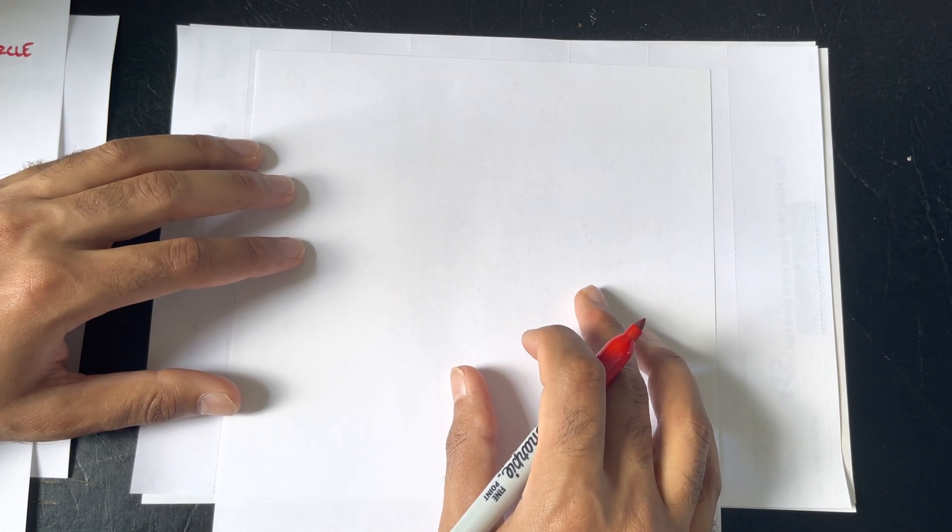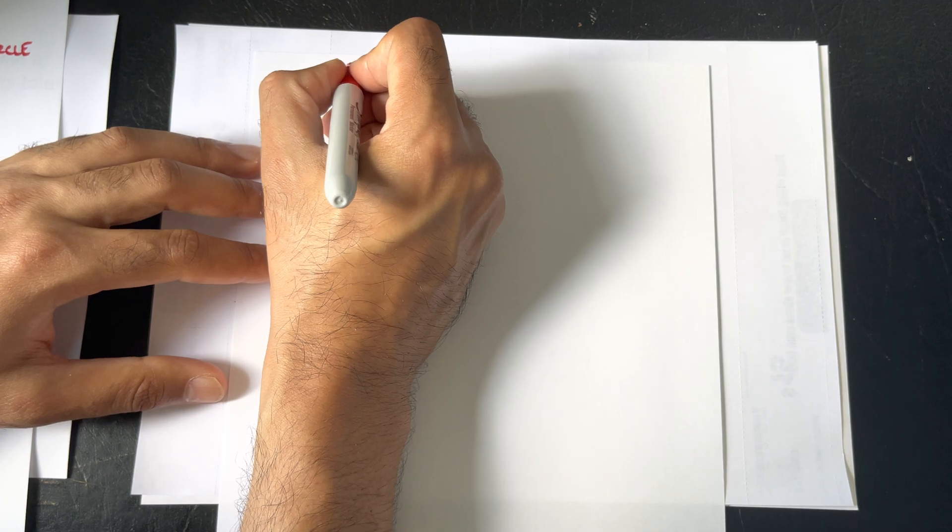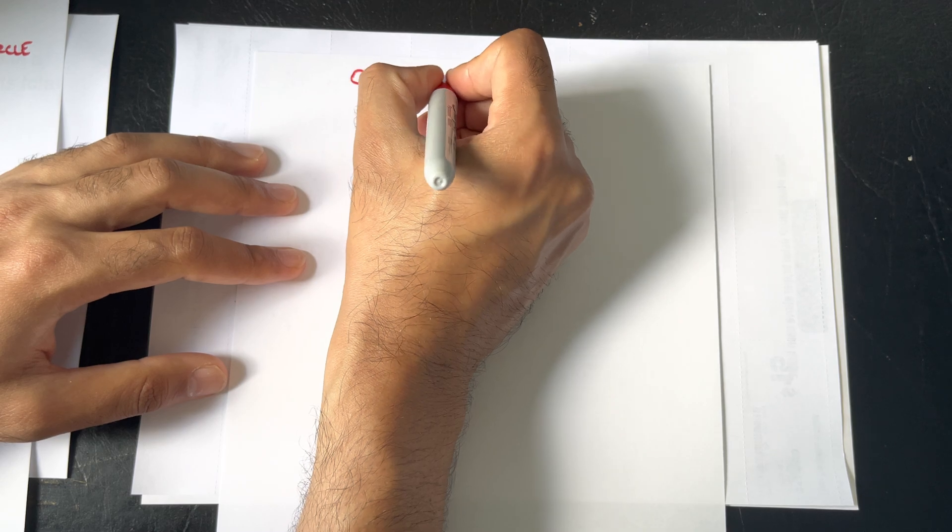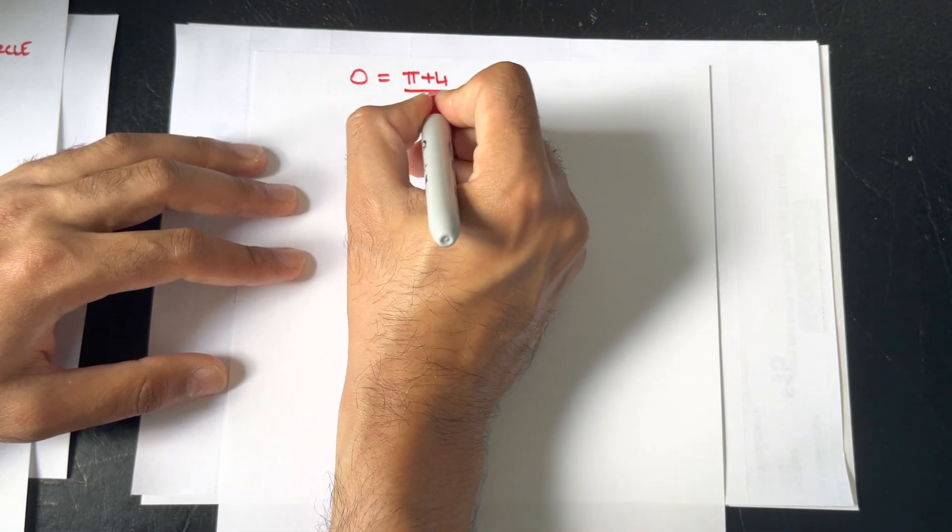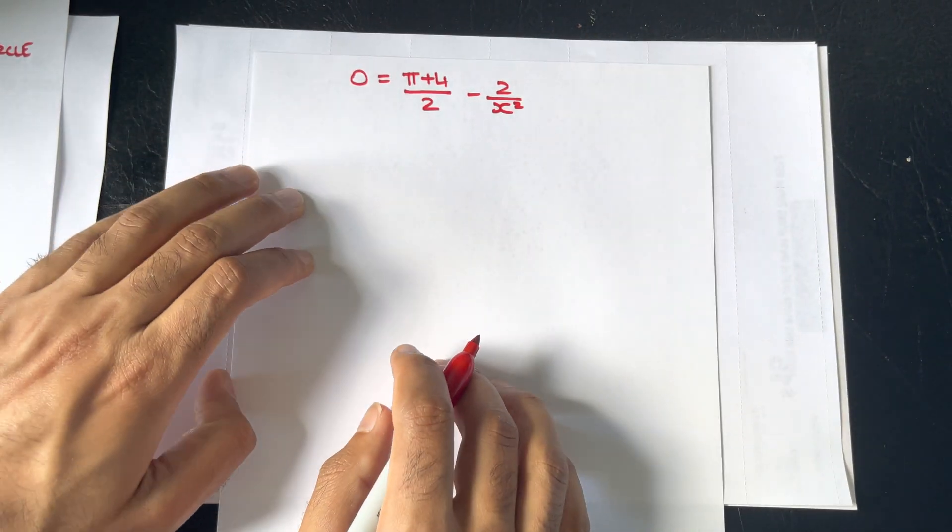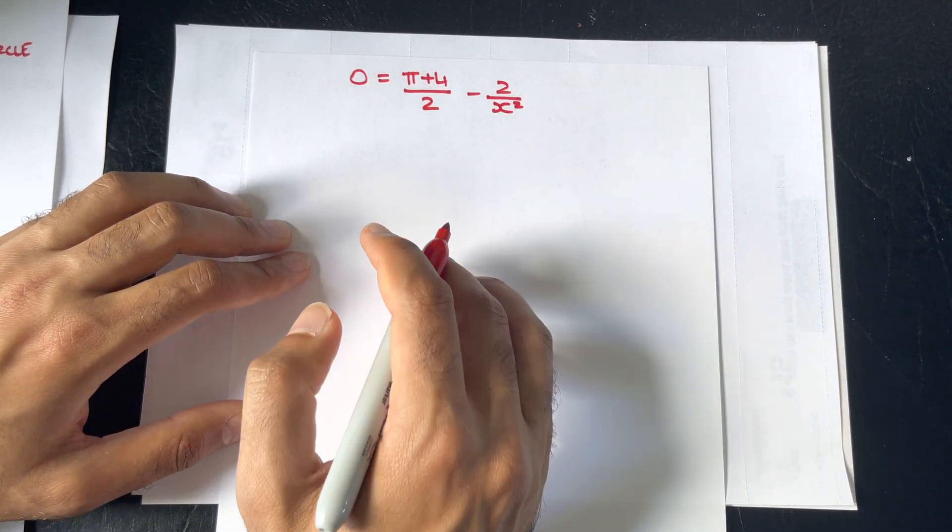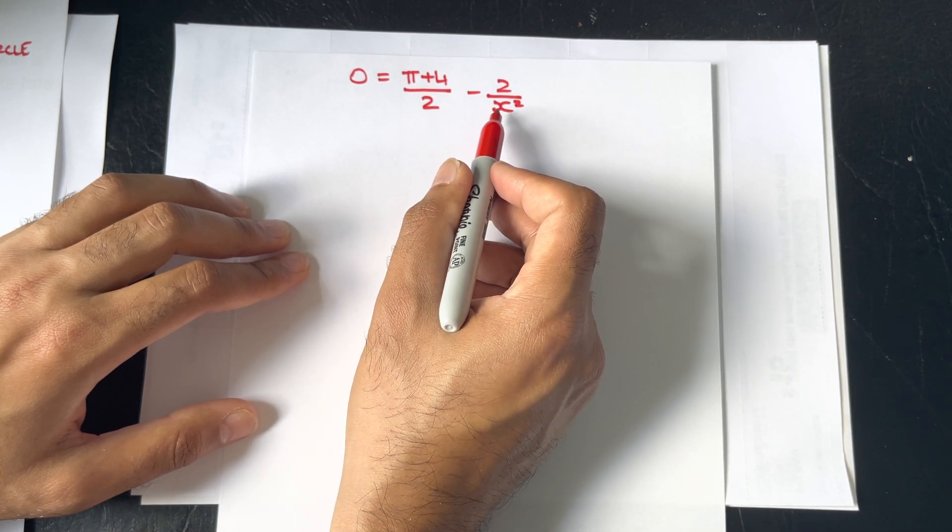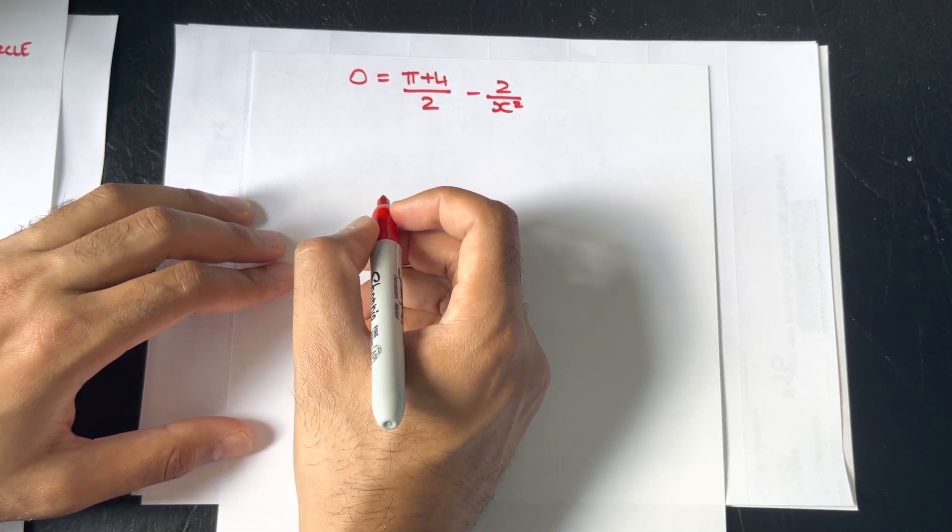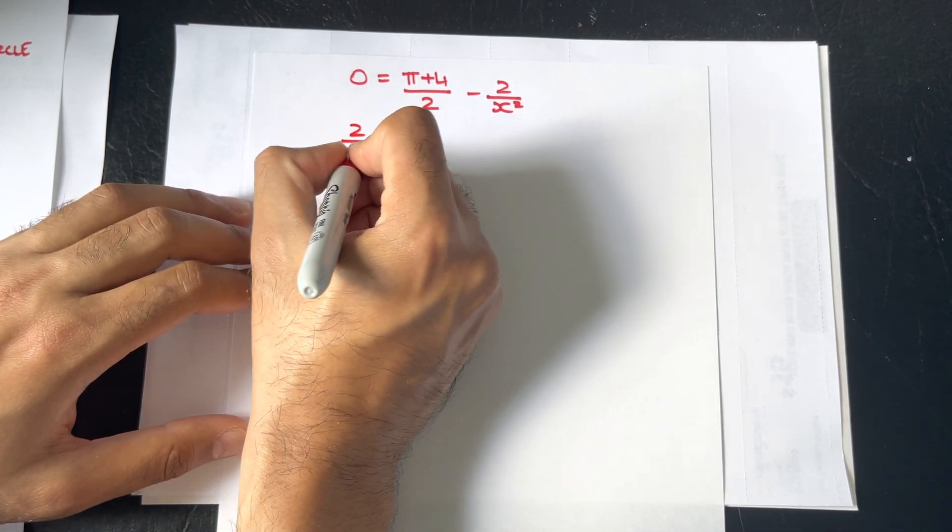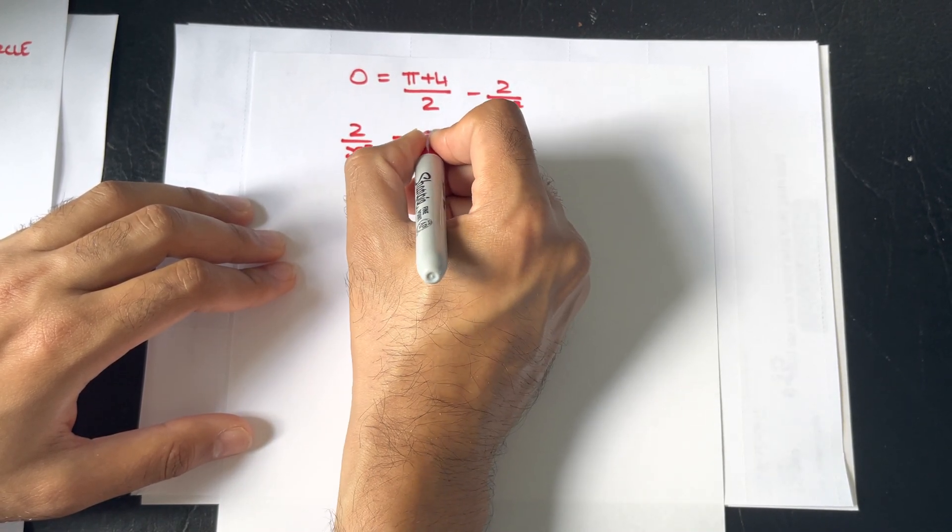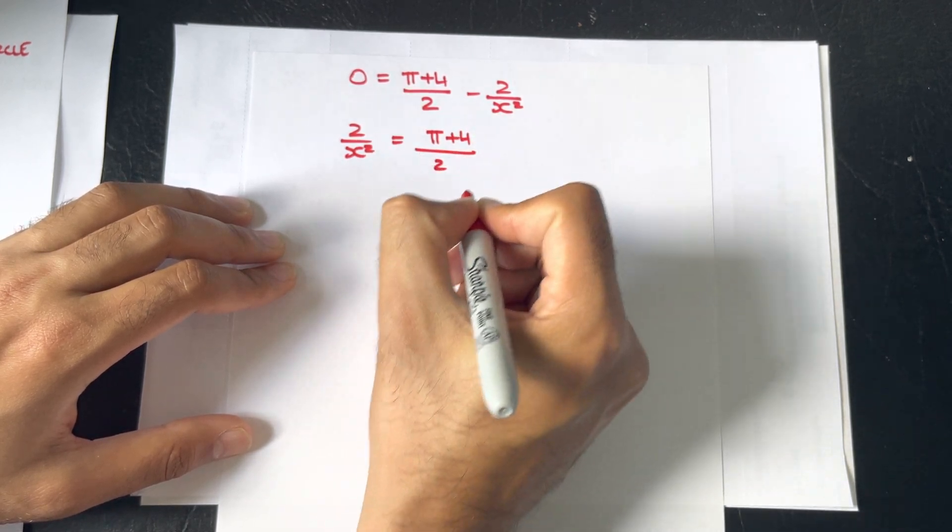And, setting it to 0. So, you'll get π plus 4 over 2 minus 2 over x squared. Taking the 2 over x squared term left of the square root, will give us 2 over x squared being equal to π plus 4 over 2.